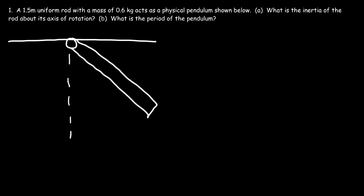In this video we're going to talk about how to solve problems associated with the physical pendulum. In this example we have a 1.5 meter uniform rod with a mass of 0.6 kilograms acting as a physical pendulum, as you can see in the figure. What is the inertia of the rod about its axis of rotation? It rotates about the end point. L is the length of the rod, and to calculate the inertia of a rod where the axis of rotation is at the end, it's 1/3 mL².